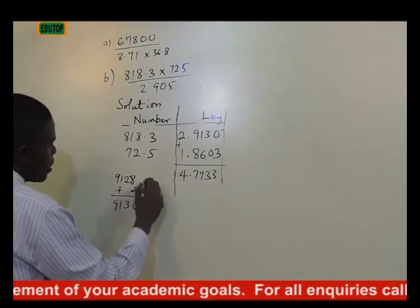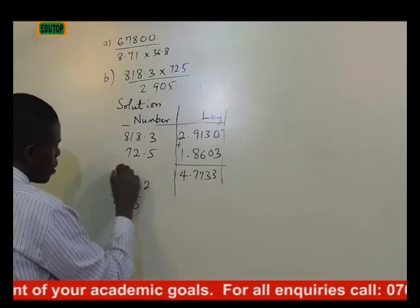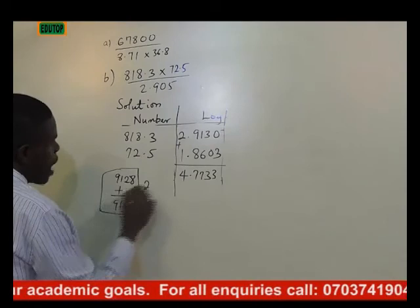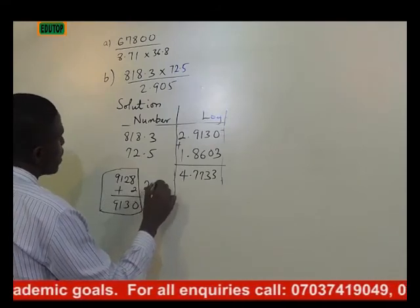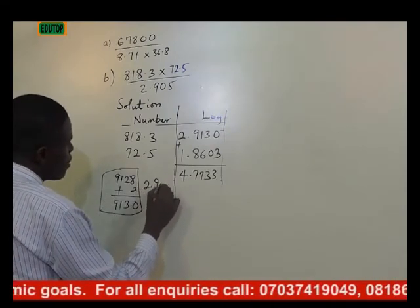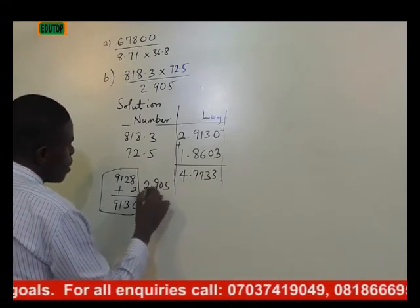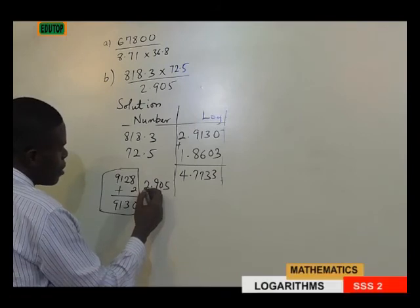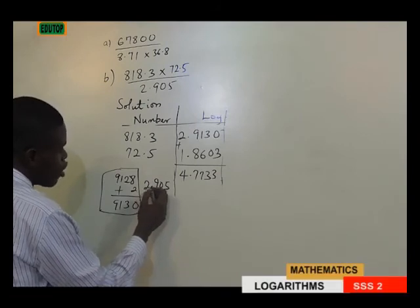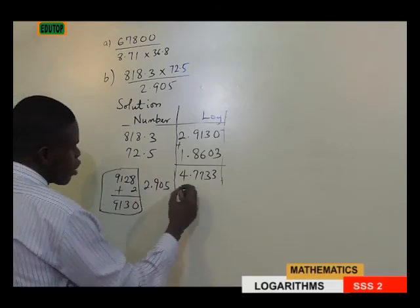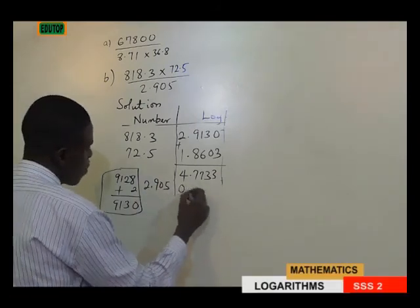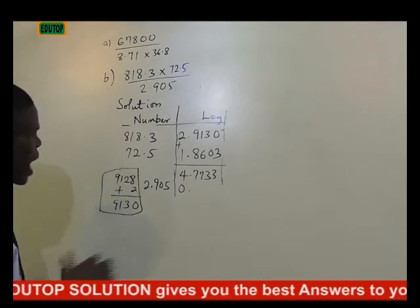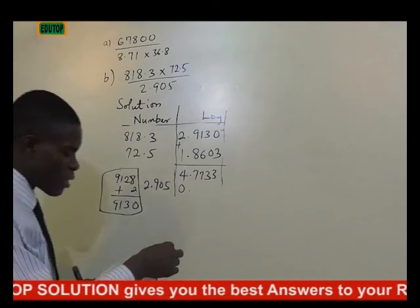Then the denominator: we have 2.905. There is one digit number before the decimal, so automatically we have 0 points. Then we check for 29 under 0 in the log reading of numbers.